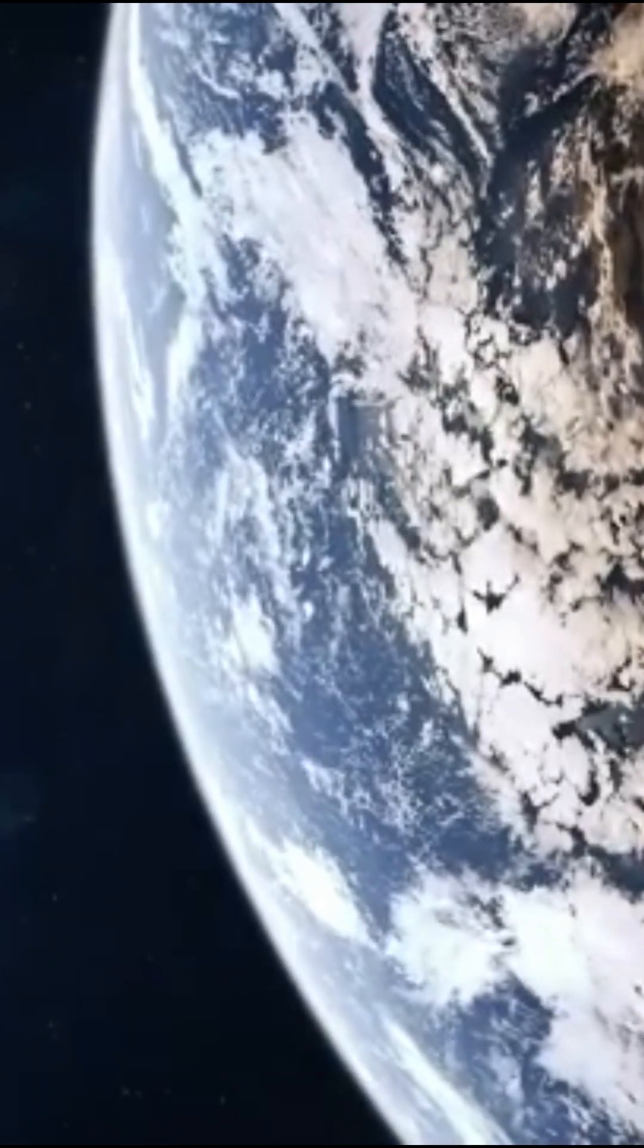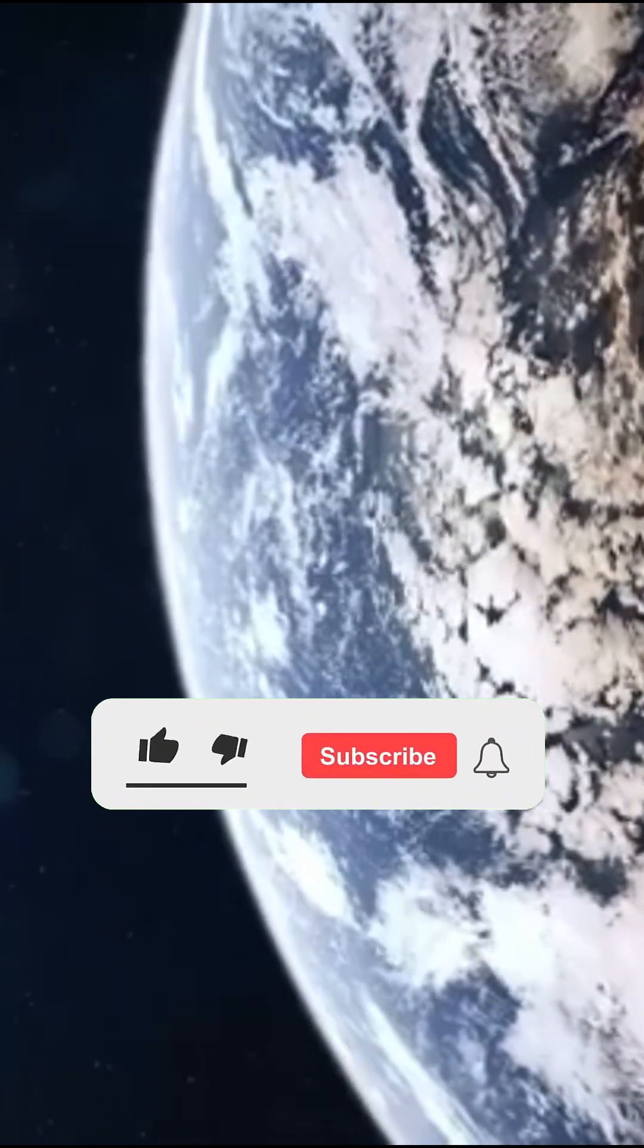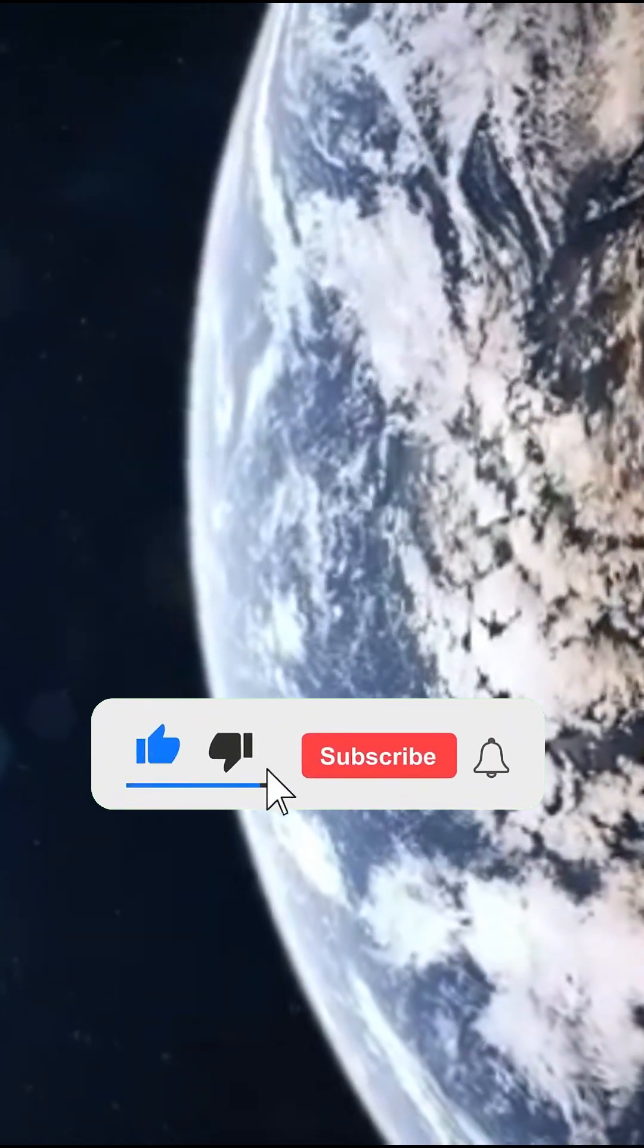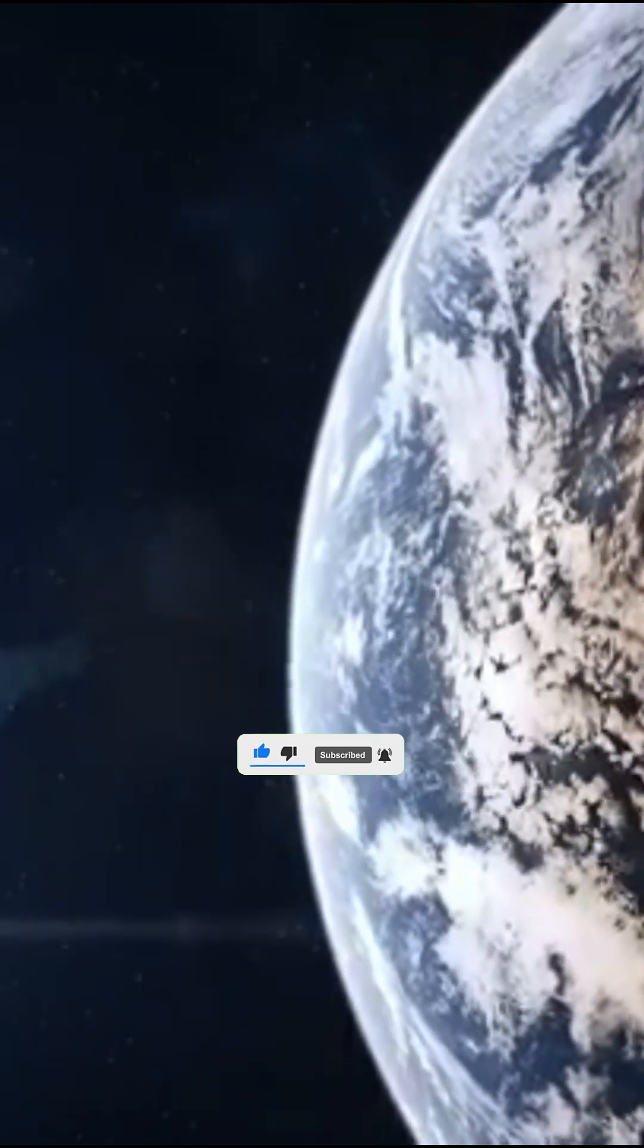The Earth distorts space and time, just like the Sun and all other massed objects in the universe. Or, put another way, the mass of every object in the cosmos bends the space around it.